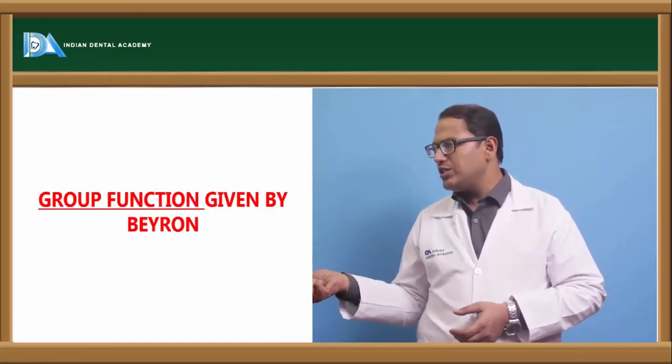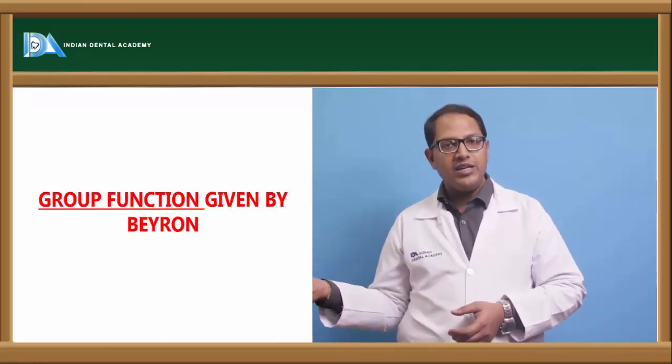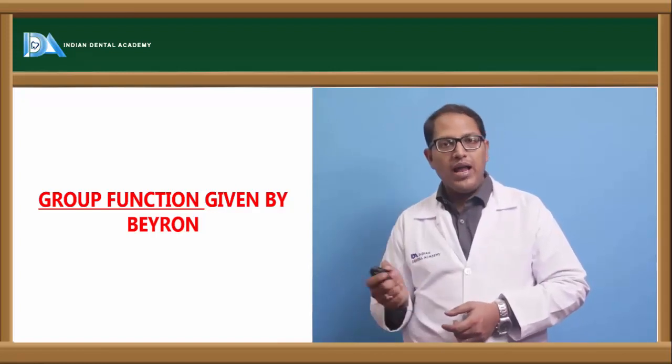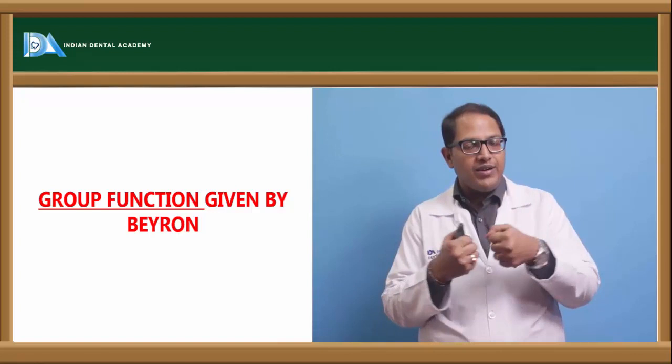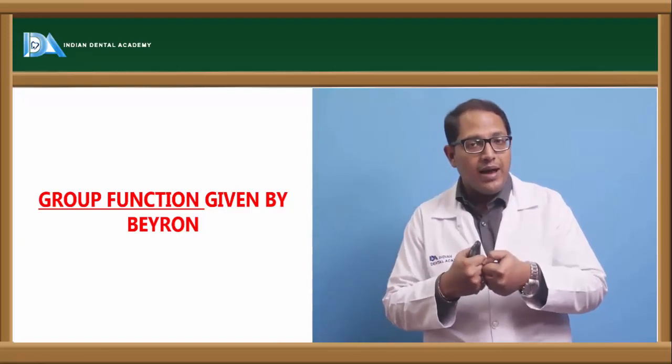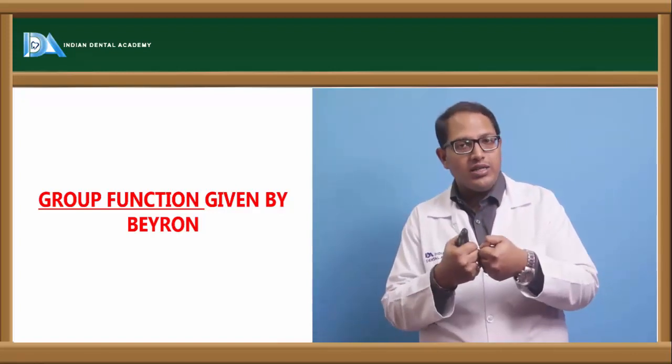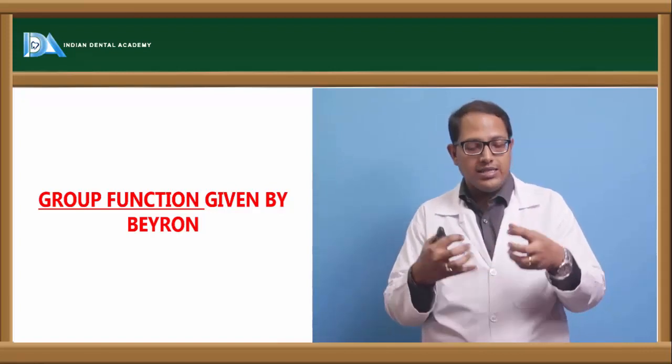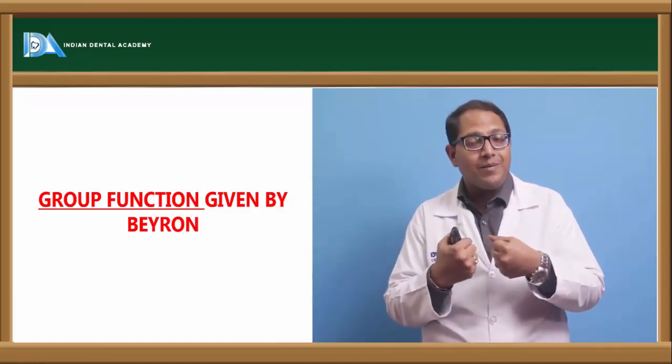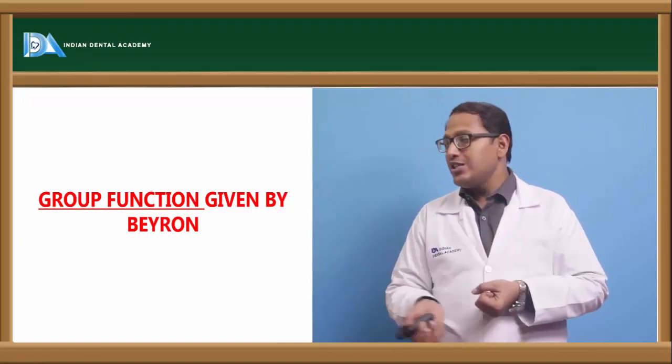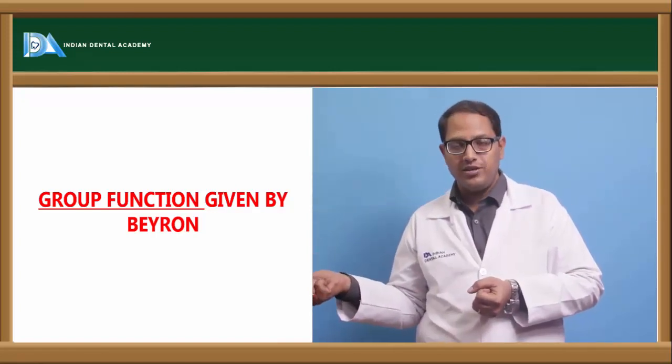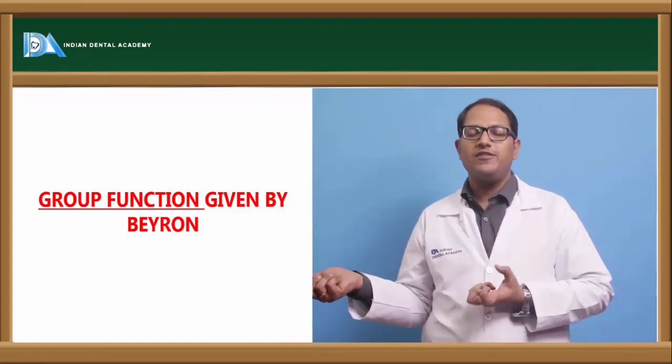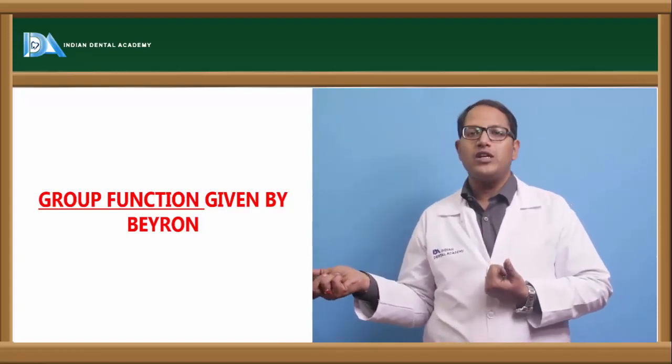It is good. This kind of occlusion is better to give in a full mouth rehabilitation with a patient who has parafunctional habit. So what will happen? Not one tooth will be affected. Like in canine guided, only canine is getting affected all the time. The proprioceptive responses or the tactile senses of the canine can get disrupted after a certain amount of time. So group function is good in those cases for the aged patient, the patients who have parafunctional habits, high force of occlusion - those cases give group function.